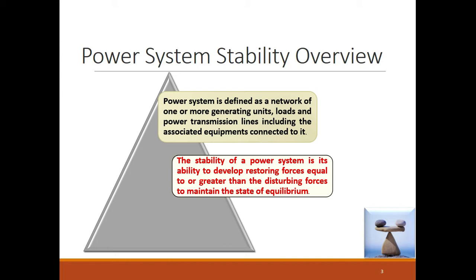Now suppose there is a 10 megawatt load increase on the power system. The output is now 110 megawatt, keeping losses constant at 20 megawatt, that is 130 megawatt total, whereas the input is 120 megawatt. Therefore there is an imbalance. The power system has to be capable of producing extra 10 megawatt so that input equals output plus losses again. That extra 10 megawatt the power system produces is what we call the restoring force.